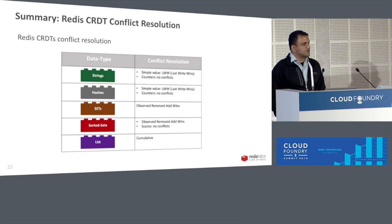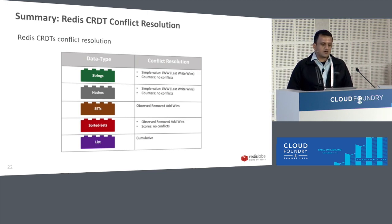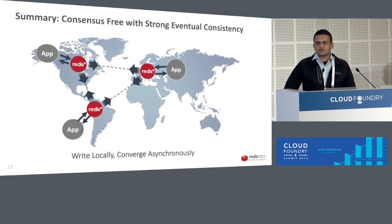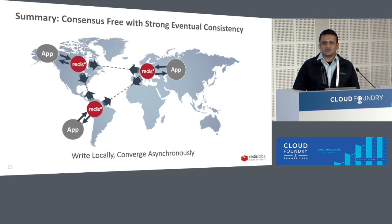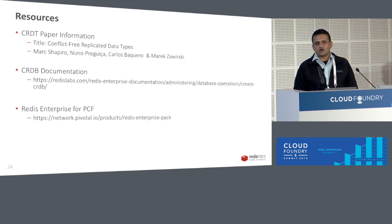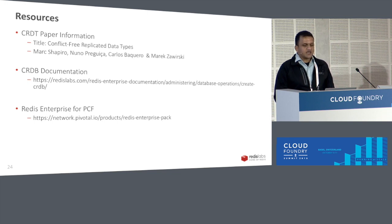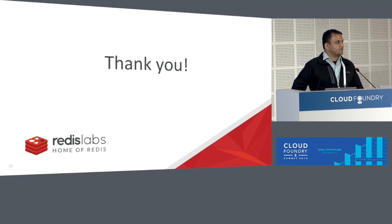In quick summary, using CRDTs we are able to take care of data synchronization based on five data structures, and you are able to achieve strong eventual consistency for your data for Cloud Foundry applications running on different continents or across different regions. This slide provides links to our paper on which the technology is based — you're welcome to download it from the Pivotal Network and try out our CRDB-based solution for Cloud Foundry. I'll now open it up for questions.